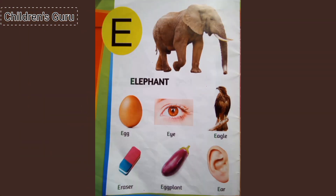E for elephant, E for egg, E for eye, E for eagle, E for eraser, E for eggplant, E for ear.